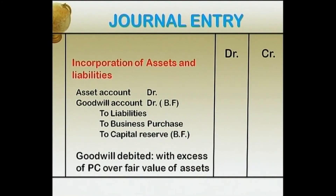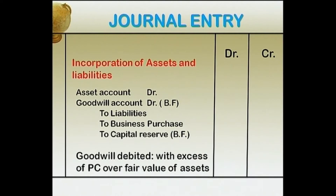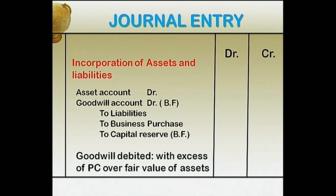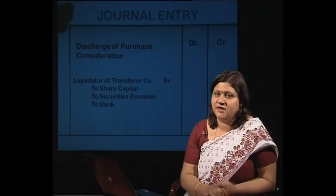The second entry — incorporation of assets and liabilities: Asset Account debit, Goodwill Account debit (as balancing figure if purchase consideration exceeds net assets), to Liabilities, to Business Purchase, and to Capital Reserve (balancing figure if net assets exceed purchase consideration). Either goodwill or capital reserve appears depending on the relationship between purchase consideration and net assets. The third entry — discharge of purchase consideration: Liquidator of Transferor Company debit, to Share Capital, to Securities Premium (if issued above face value), and to Bank (for any fractional adjustments).